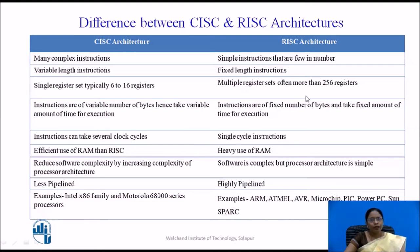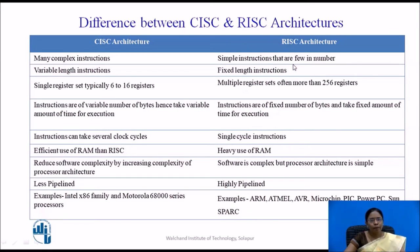CISC has no pipelining or very little pipelining, whereas RISC is highly pipelined. Examples of CISC architecture include the Intel x86 family and Motorola 68000 family. Examples of RISC architecture include ARM, Atmel AVR, Microchip, and SPARC.